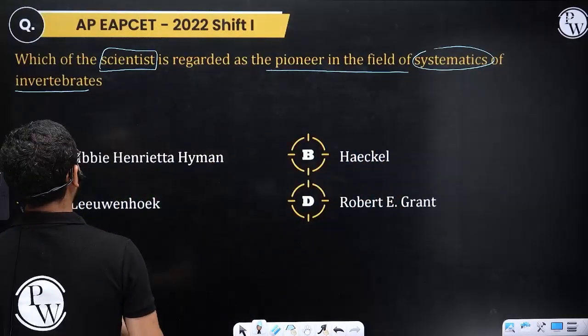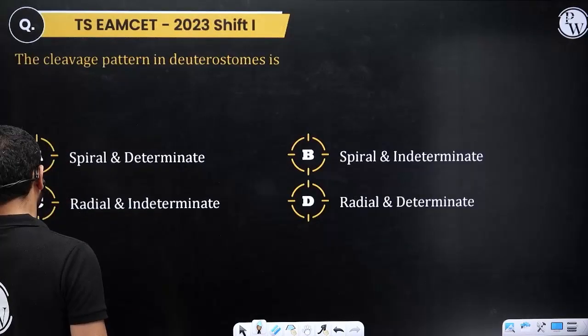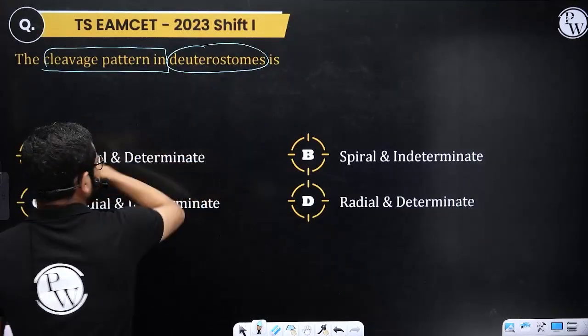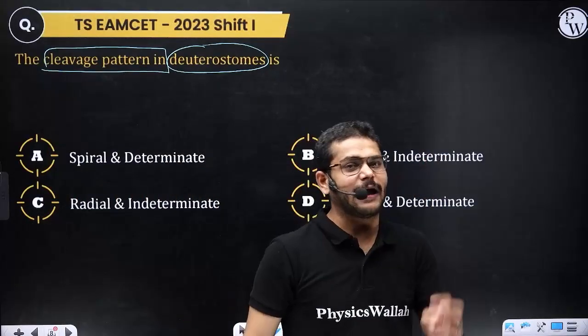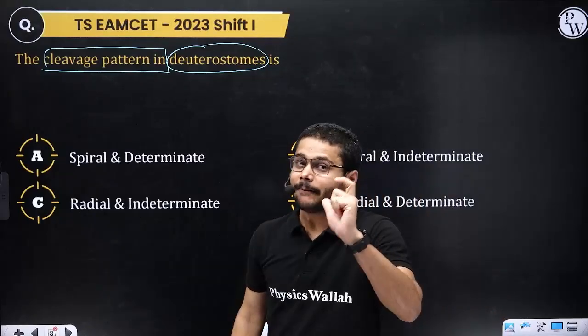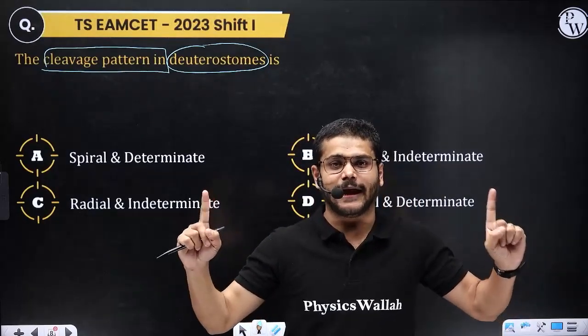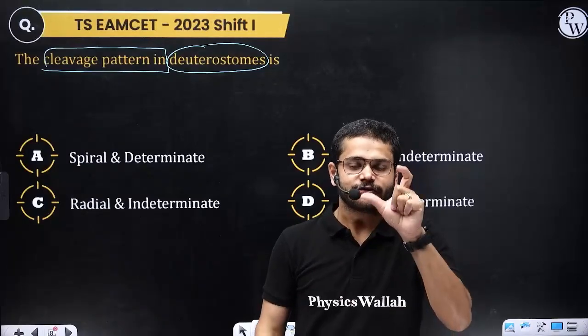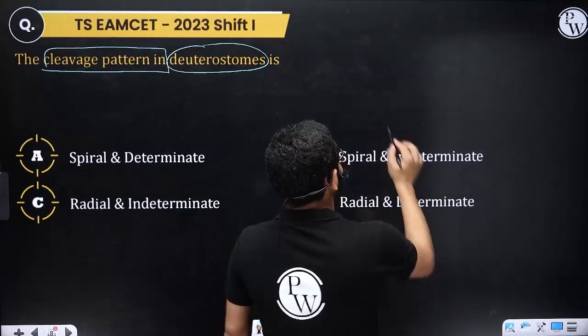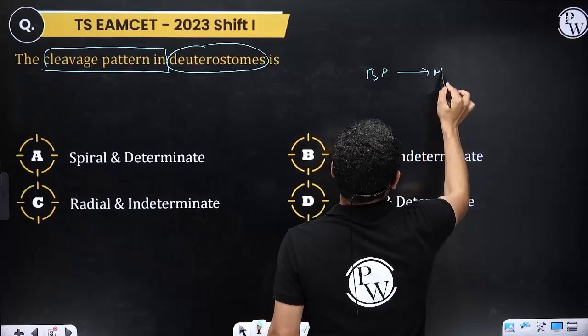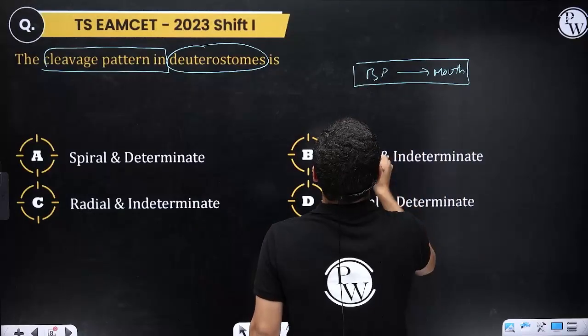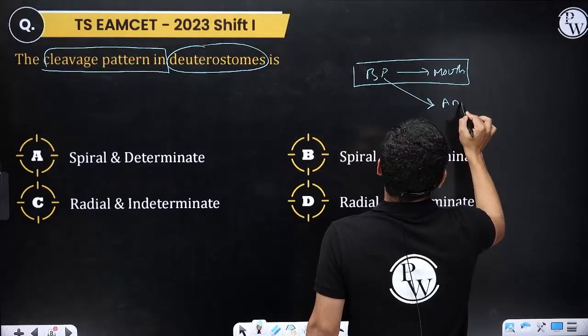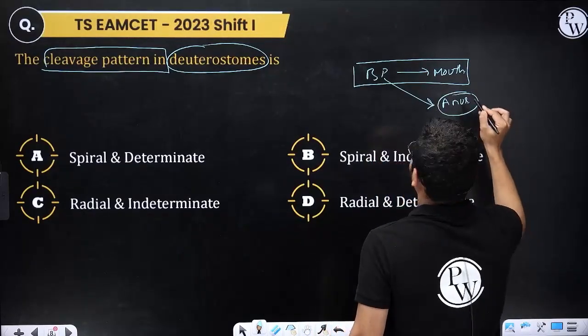Next question: The cleavage pattern in deuterostomes. In triploblastic organisms with bilateral symmetry, there are two types: protostomic and deuterostomic. In protostomes, the blastopore turns into the mouth. In deuterostomes, the blastopore turns into the anus and mouth forms later.